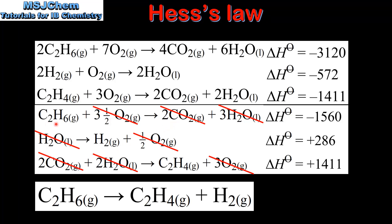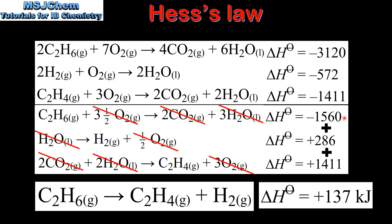We are now left with one mole of ethane, one mole of hydrogen, and one mole of ethene, which gives us our final equation. The final step is to add together the enthalpy changes for these three reactions, which gives us an enthalpy change for the final reaction of positive 137 kilojoules.